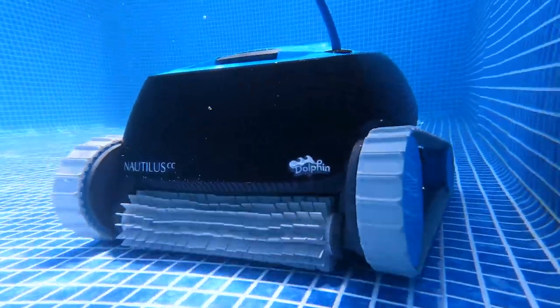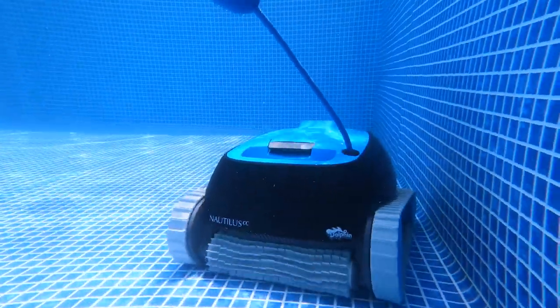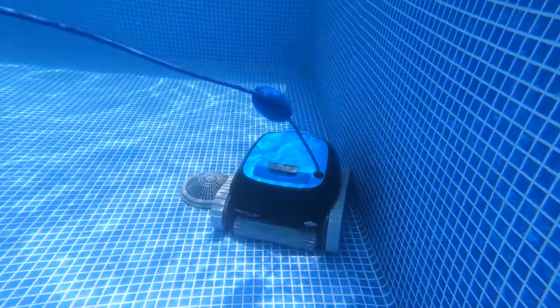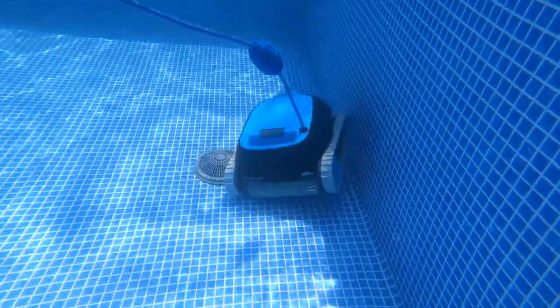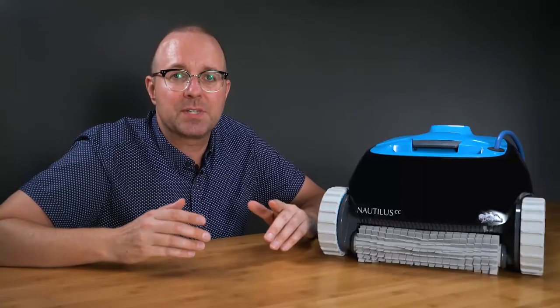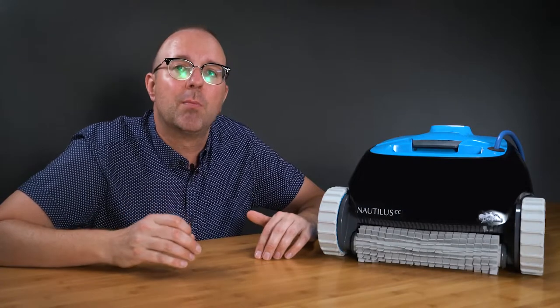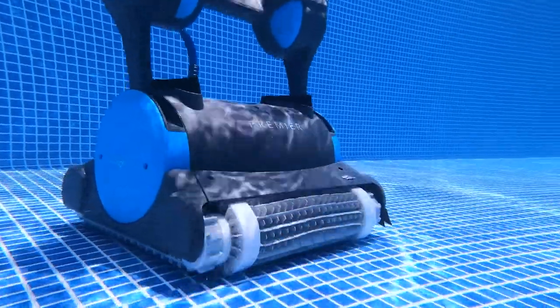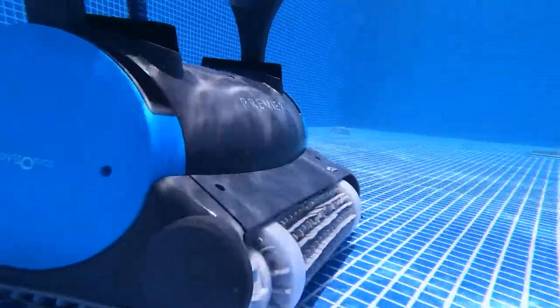The coverage of the unit is average, and if your pool is large, the Nautilus CC won't be able to cover all the pool, so you'd be better off looking for other units. It vacuumed medium-sized particles and debris pretty well, but it doesn't have the suction power that you'll find on other units such as the Dolphin Quantum and Dolphin Premier.